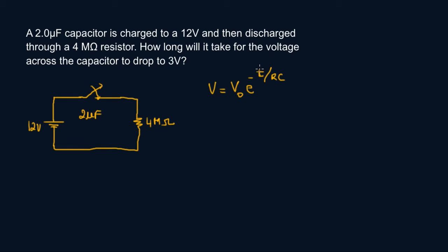V equals V0 times e to the power minus t over RC. The question is asking for how long it takes to drop to 3 volts. So what we can do is take out minus t over RC and we're going to have to use the natural log function.